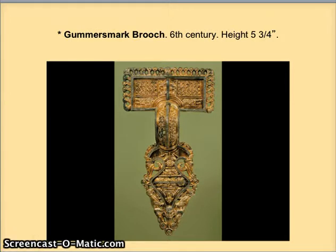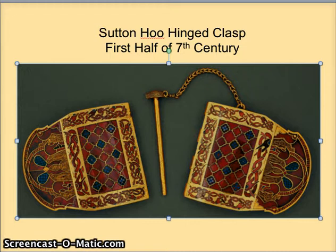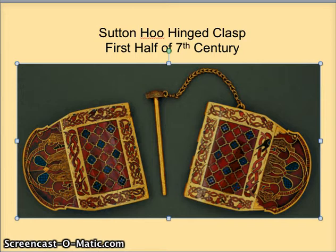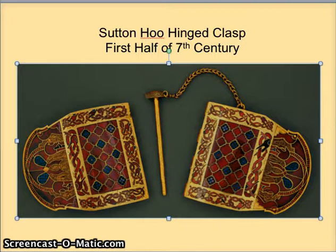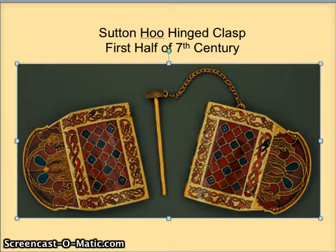Now let's look at another work. Here we have the Sutton Hoo hinged clasp. This is an incredibly decorated clasp that was used to hold leather armor in place. The origin of this is from the Celts and the Anglo-Saxons, who invaded Britain from Germany and really took over the whole islands. Their influence was quite strong on the art and culture of the period. In the literature of the time, there are references to this magnificent jewelry worn by the upper class. There's an epic tale called Beowulf that describes a hero's burial heaped with precious stones and treasure. They found such a burial in Sutton Hoo — hoo means hill — the Sutton Hill burial, where they found this piece of jewelry.